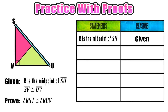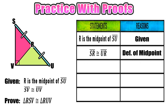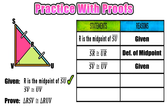If we visualize segment SU with point R as the midpoint, a midpoint cuts a segment in half, so we can conclude that SR and UR are congruent. Our reason is the definition of a midpoint. Now let's move to the second given, which tells us that segment SV is congruent to segment UV — SV and UV have the same length.